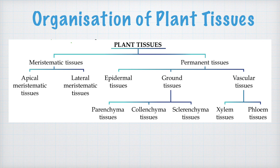We have now covered all three types of ground tissue. Next we are going into vascular tissues, which are xylem tissue and phloem tissues.